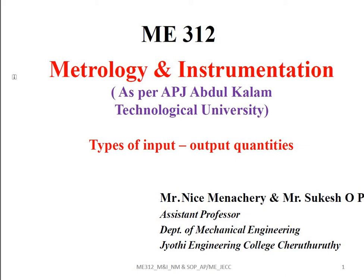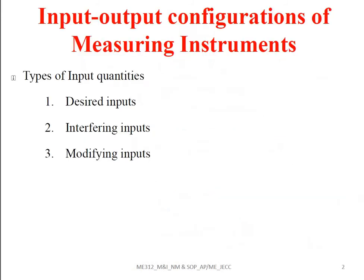Today we are discussing the types of input-output quantities. In general, the different types of input quantities are: first, desired inputs; second, interfering inputs; and third, modifying inputs. Now, coming to the desired inputs.